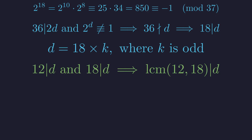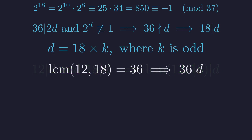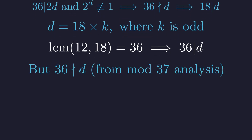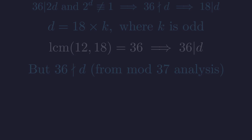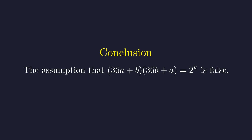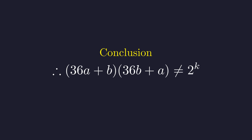Let's combine our constraints. Since 12 divides d and 18 divides d, their least common multiple must also divide d. The LCM of 12 and 18 is 36, so 36 must divide d. However, our analysis from the modulo 37 condition showed that 36 does not divide d. This is a contradiction — we cannot have 36 divides d and 36 does not divide d simultaneously. Therefore, the assumption that the expression could be a power of 2 leads to a contradiction, and the original statement must be true: for any positive integers a and b, this expression can never be a power of 2.